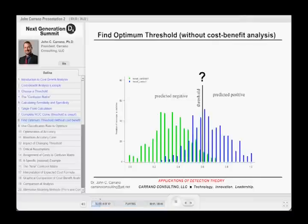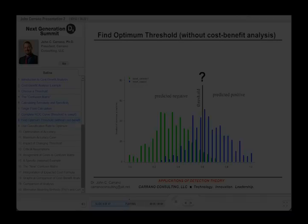So now let's find the optimum threshold without using cost-benefit analysis. So this is just the mathematical way that we learned about right before we went on break. And in a moment, I'm going to come back to the whole manufacturing example.